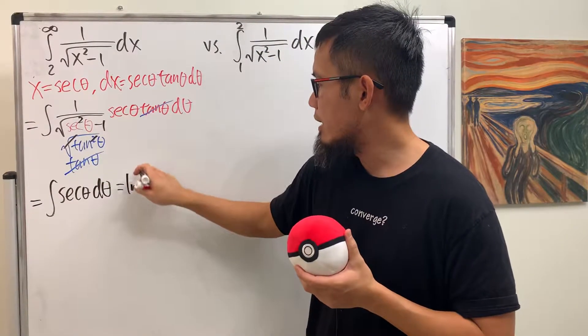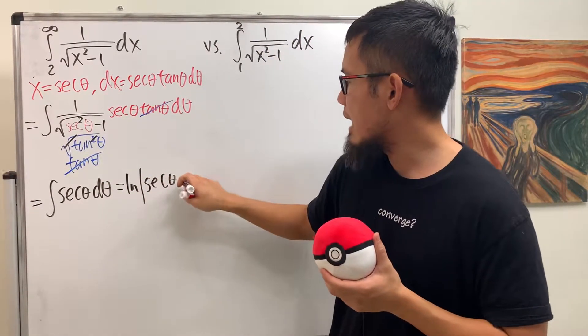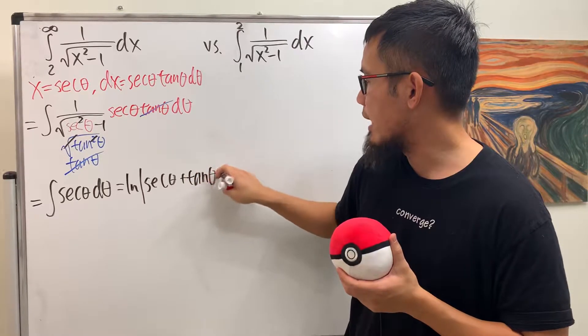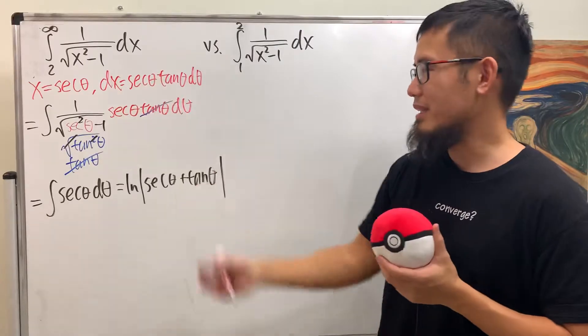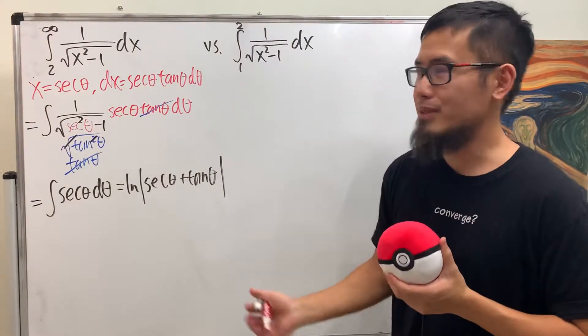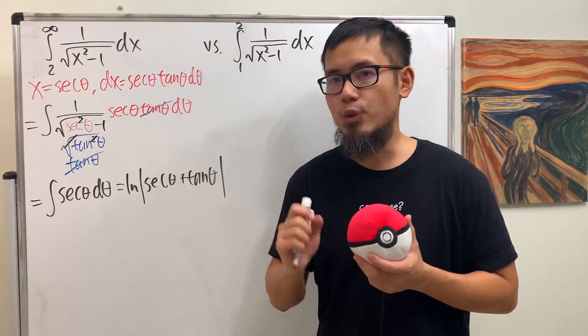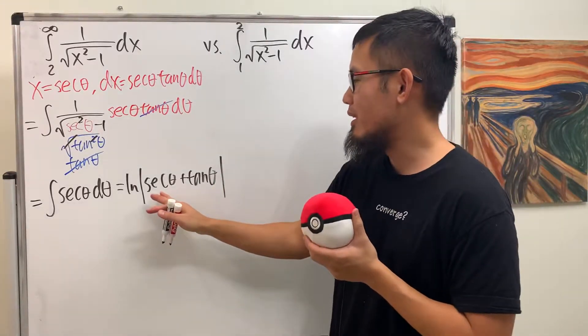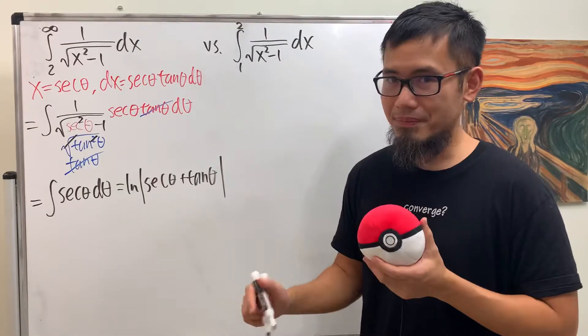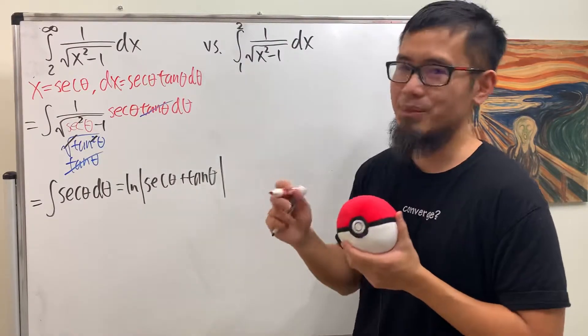Which is going to be ln absolute value of secant theta plus tangent theta. Don't worry about plus c, because we are going to plug in numbers, but we do have to worry about going back to the x world. Again, that's just my recommendation, especially when you are doing the trig substitution. Go back to the x world and then work out the numbers there.